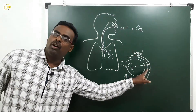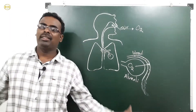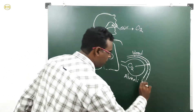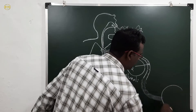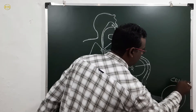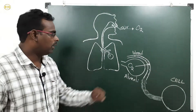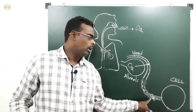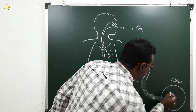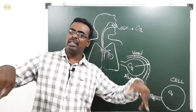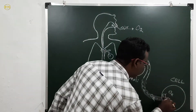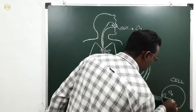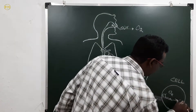This blood carries the oxygen gas to every cell of our body. Our body is made up of many cells. The blood carries oxygen to the cell. Inside the blood, oxygen gas is present. The cell takes up the oxygen gas. Already inside the cell, glucose is present — glucose is the simple food. The cell breaks down the glucose using oxygen.